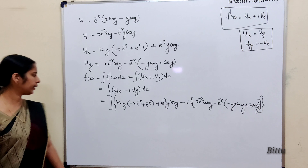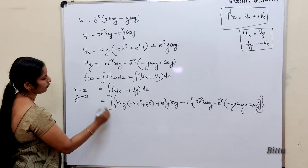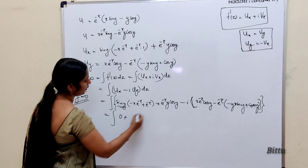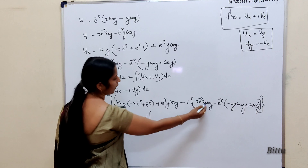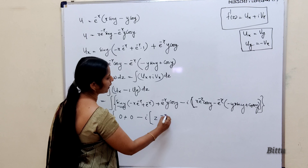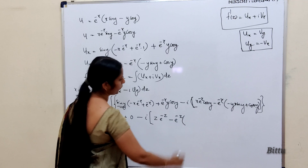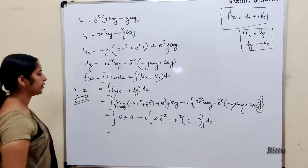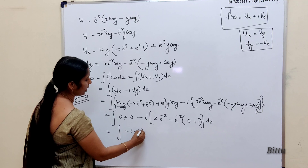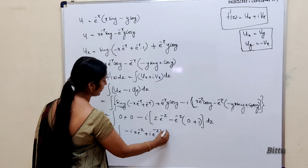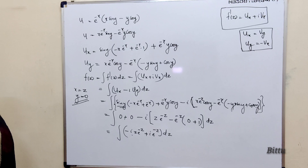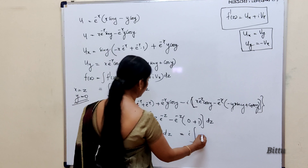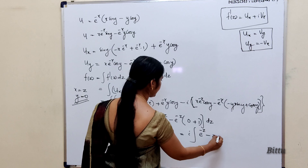Next, put x = z and y = 0. When y = 0, sin(0) = 0, so terms with sin(y) in u_x vanish completely, giving 0. For u_y: cos(0) = 1, so x·e^(−x)·cos(0) = x·e^(−x) which at x=z gives z·e^(−z); and −e^(−x)·cos(0) = −e^(−x) giving −e^(−z); the sin(0) = 0 term also vanishes. So we get: integral of [−i·(z·e^(−z) − e^(−z))] dz = i·integral of (−z·e^(−z) + e^(−z)) dz.